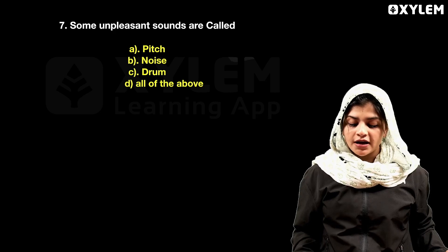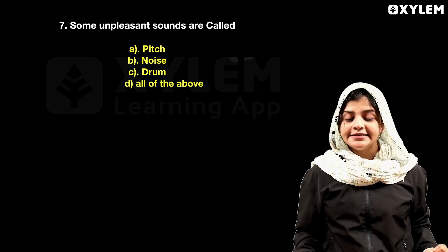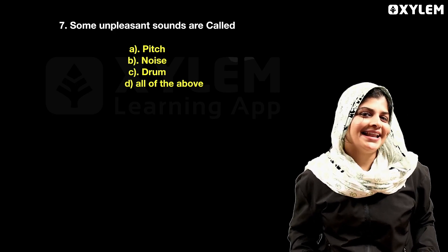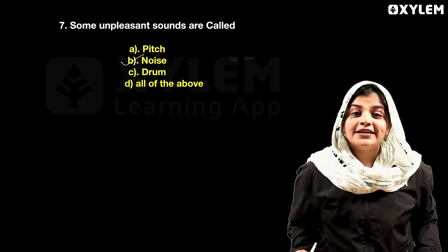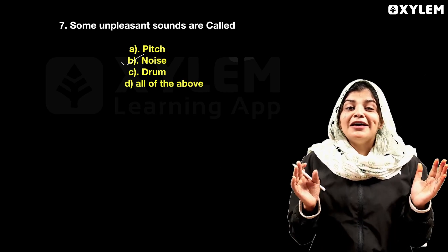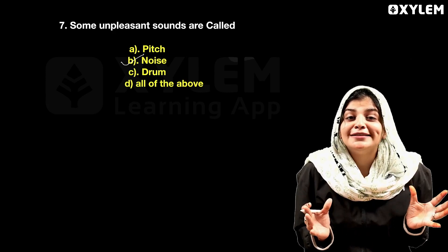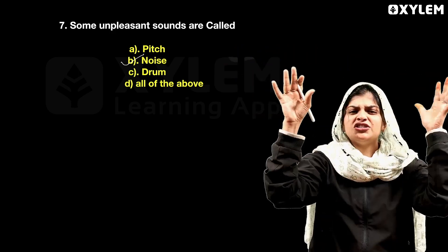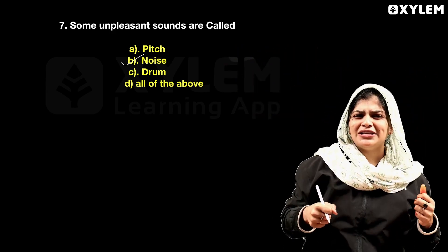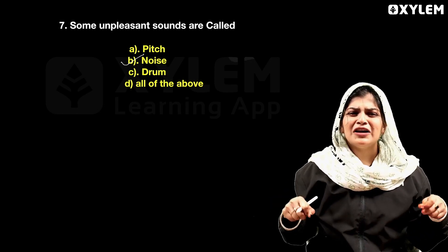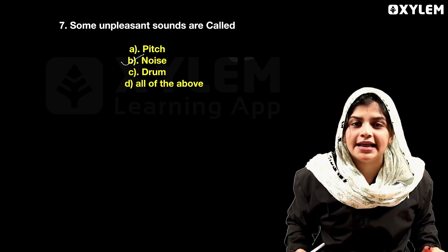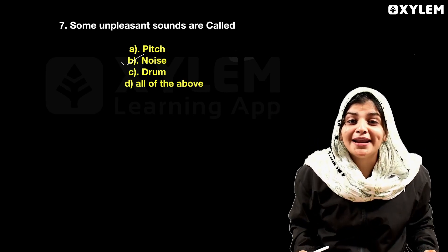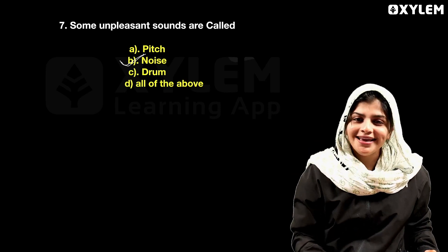Some unpleasant sounds are called? The options are: pitch, noise, drum, all of the above. The answer is noise. For example, if we are in the classroom, unpleasant sounds around us are called noise. So noise is the right answer.